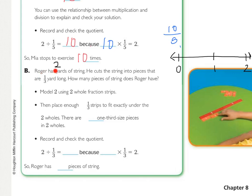So Roger has two yards of string. He cut the string into pieces that are one third of a yard long. How many pieces of string does Roger have? So here it says to model 2 using two-hole fraction strips. And you can see in the picture right here, they have one hole and then another hole. Well,